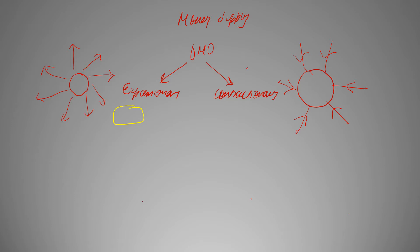So what happens is the central bank has this bond, and when they think of expanding the money supply — increasing the money supply — they'll buy the bond. And if they buy the bond, they'll have to pay money for the same, and that will lead to an increase in money supply.